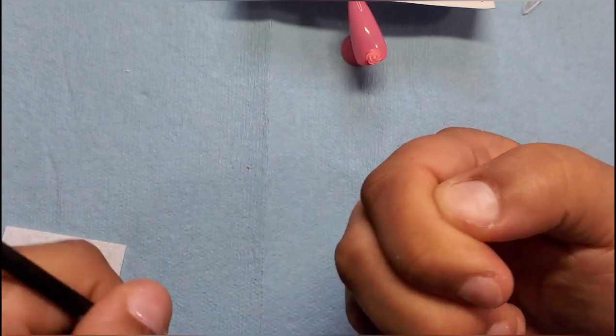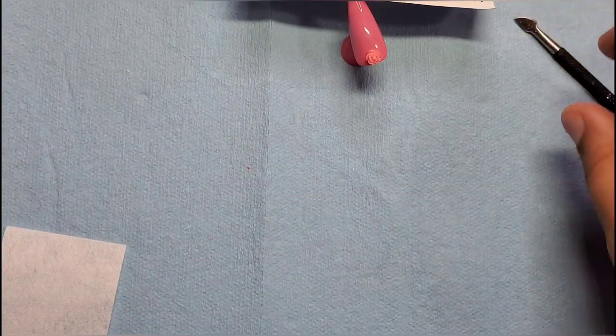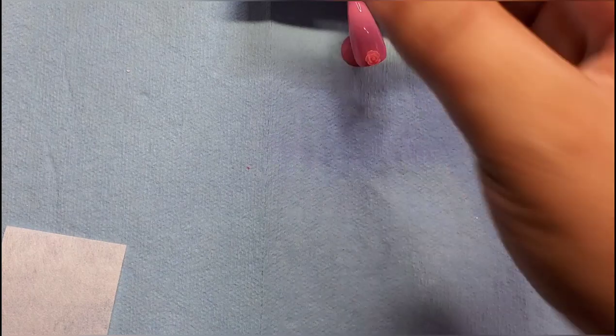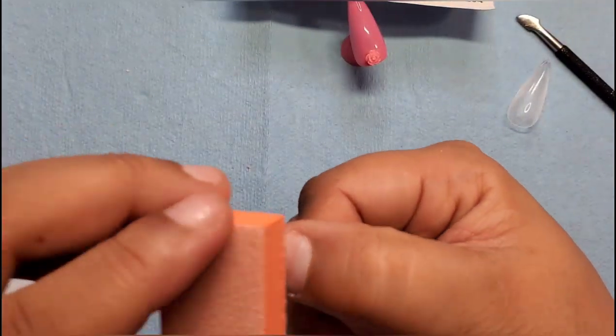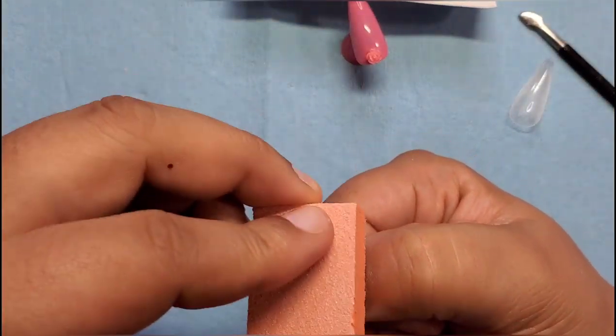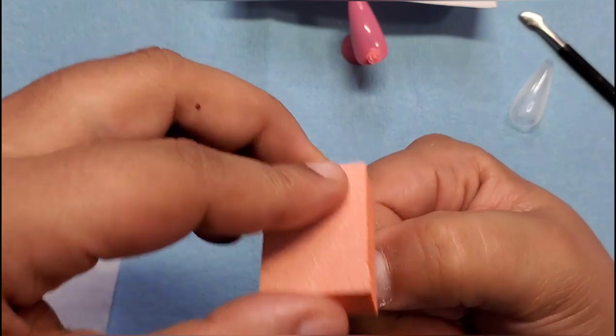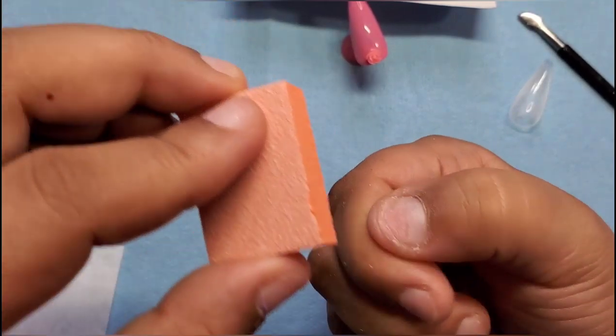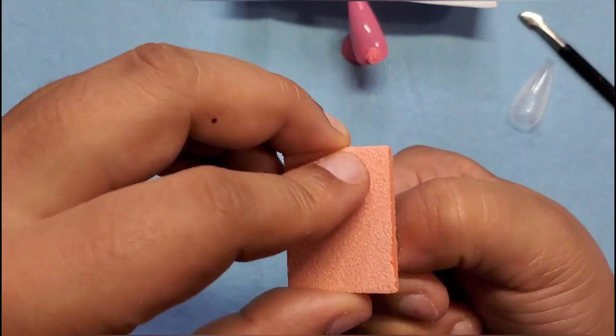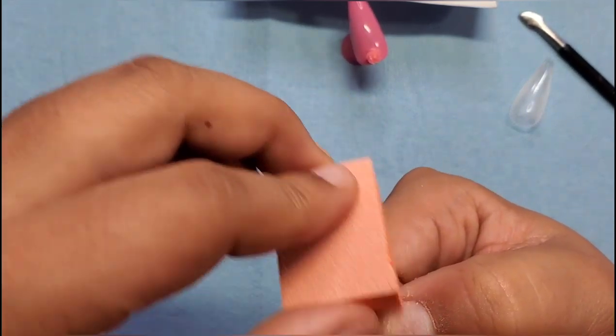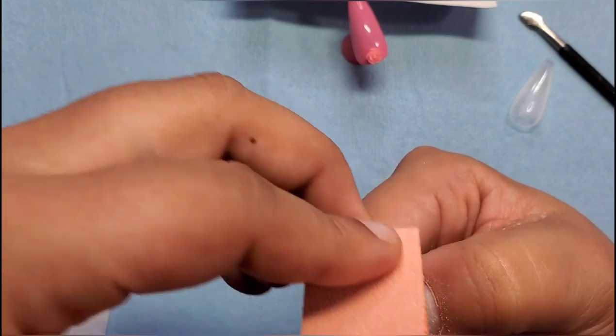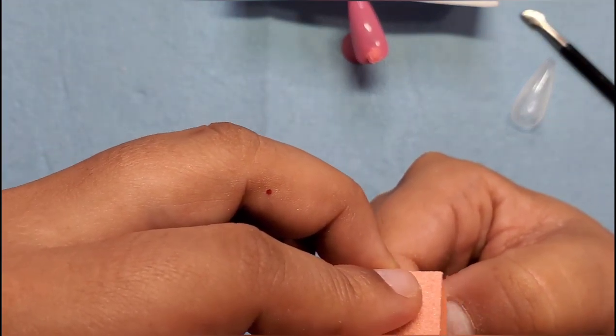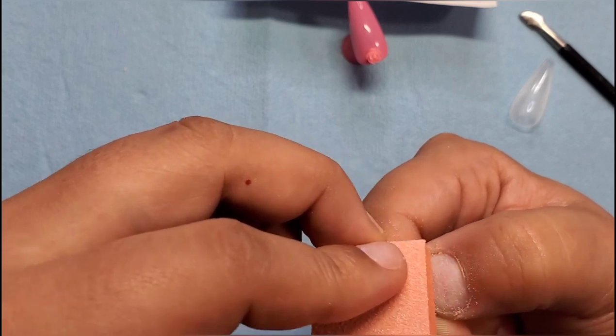Then you would take your buffer and what you're going to do is kind of rough it up, remove the shine. You don't have to overdo this part, but you're going to remove the shine from your nail, kind of create some scratches in it just so that your press-on nail has something to adhere to.